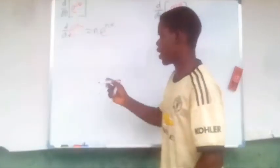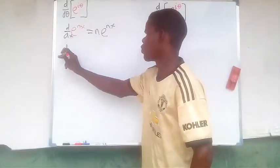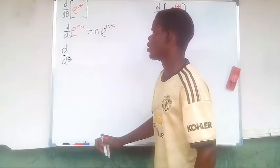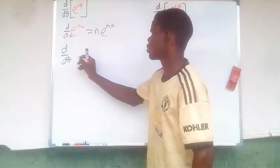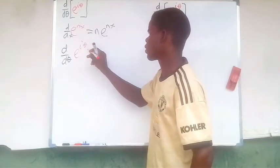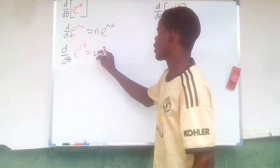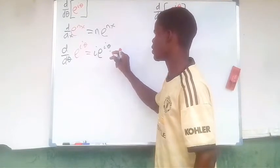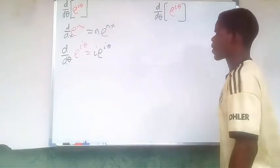Straight up, you have the derivative with respect to theta of e to the i theta. We're going to have i times e to the i theta. That's it.